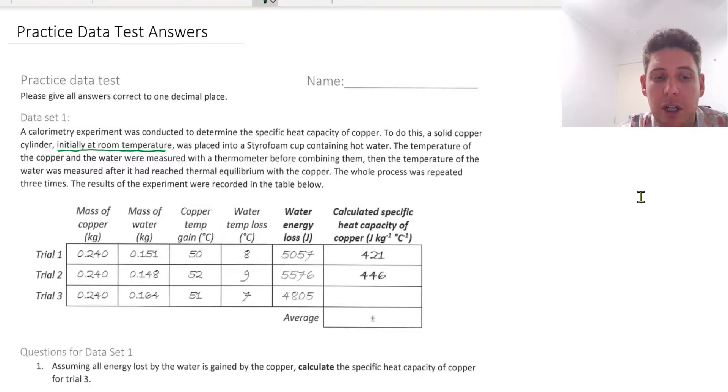So the first question, assuming all energy lost by the water is gained by the copper, calculate the specific heat capacity of copper for trial 3. So we need to figure out what is the specific heat capacity.